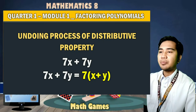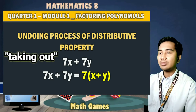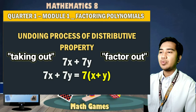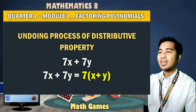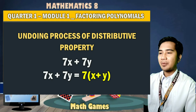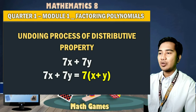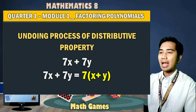So undoing the distributive property is one of the main processes of factoring. This process is also called taking out or factoring out. In our example, we factored out 7 from 7x plus 7y since it is the common factor in the terms of the given expression. Factoring polynomials is a process of writing a polynomial as a product of two or more other polynomials. If the polynomial cannot be written as a product of other polynomials, it is said to be prime, except one and negative one. In this case, a polynomial is said to be factored completely.